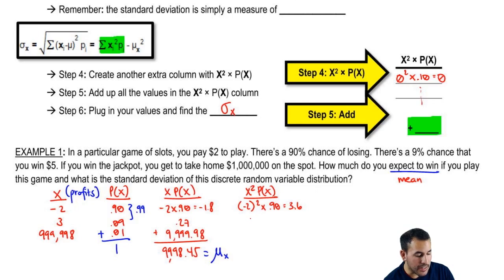Next, we got 3 squared is 9. 9 times 0.09 is 0.81. And then 999,998 squared times 0.01 is actually a really huge number. It's 5 nines, a 6, 3 fours, and a 4. This is 9,999,960,004.